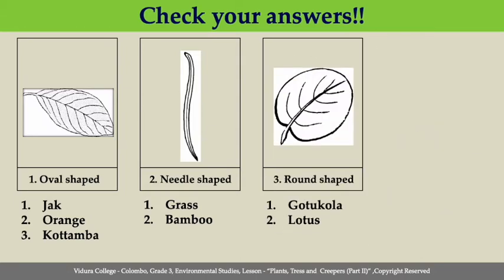Third one, round-shaped. You can draw the round-shaped leaf as shown in the picture. Cotocolor and lotus leaves can be taken as examples for round-shaped leaves.